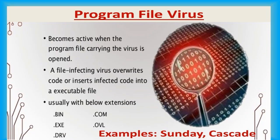Program file virus: This virus infects the executable files or programs such as those with extensions like .com, .exe, and so on. These programs get loaded into the computer memory during execution. The virus becomes active in memory by replicating itself and infecting files on the disk. Sunday and Cascade are some examples of program file virus.